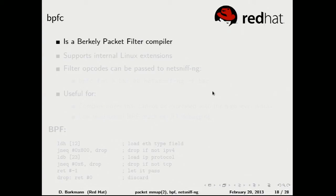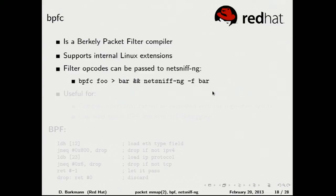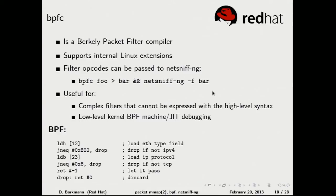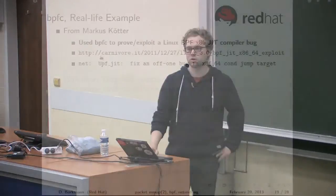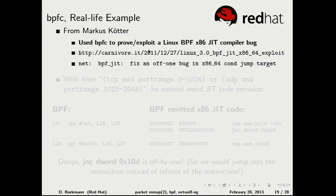The Berkeley Packet Filter compiler translates an assembler-like language into the opcodes you saw in previous slides. This example loads a header, compares it, and drops the packet if it's not IP. It was implemented with flex and bison. netsniff-ng can also load these opcodes as a filter, and it's useful for debugging and testing just-in-time compilers. A real-life example: Marcus Schutze used bpfc to prove a JIT compiler bug in x86-64 by writing an exploit for it.